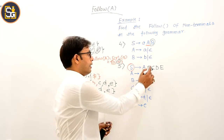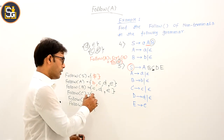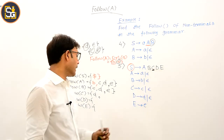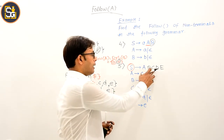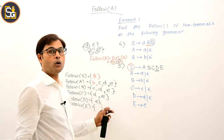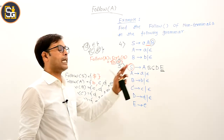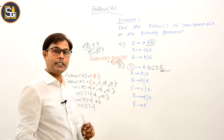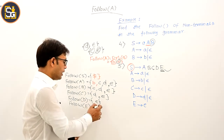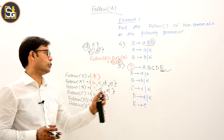For capital C: its immediate right is capital D. FIRST(D) gives d and epsilon. When epsilon is replaced, E comes forward — FIRST(E) gives e. So FOLLOW(C) = {d, e}. For capital D: immediate right is capital E, and FIRST(E) gives e. So FOLLOW(D) = {e}. For capital E: its immediate right has nothing, so rule 4 applies — FOLLOW of E equals FOLLOW of S equals dollar. So FOLLOW(E) = {$}. This is the final answer for all non-terminals of this question.